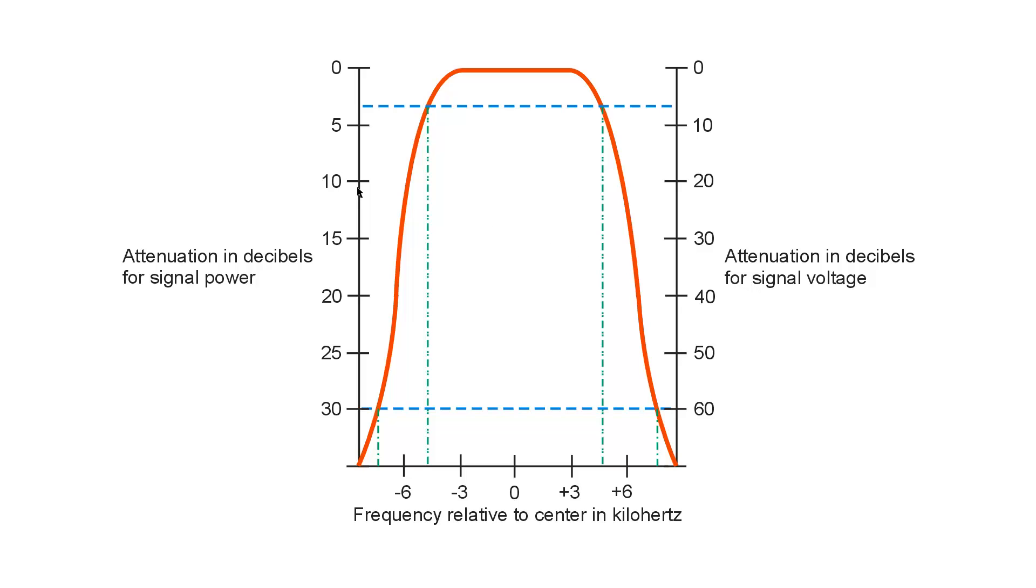If we're talking about, say, 10 decibels down for signal power, that's the equivalent to 20 decibels down for signal voltage. 25 decibels down for signal power would be twice that or 50 decibels down for signal voltage.